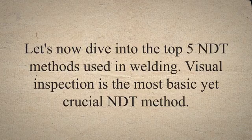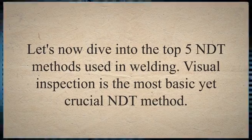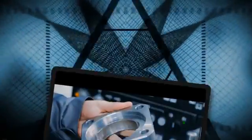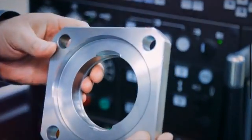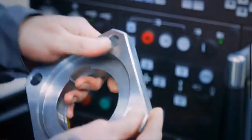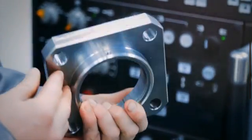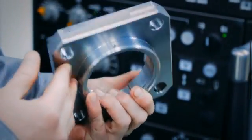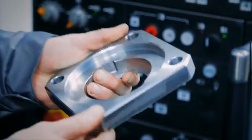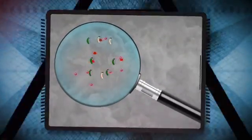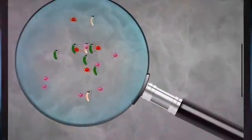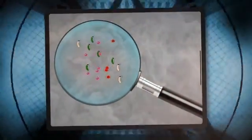Visual inspection is the most basic yet crucial NDT method. It involves a thorough visual examination of the weld, looking for any visible defects such as cracks, porosity, or incomplete fusion. While it may seem simple, visual inspection requires trained eyes and attention to detail. It's often the first step in the NDT process and can quickly identify major issues that need further investigation.